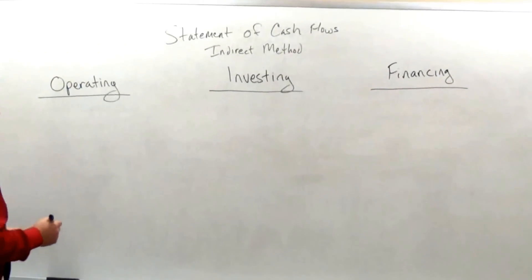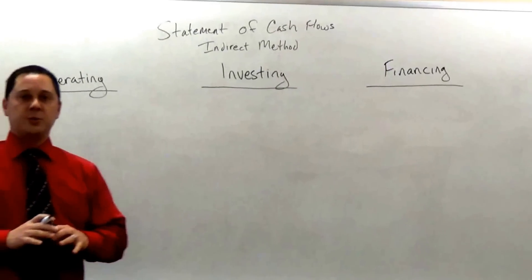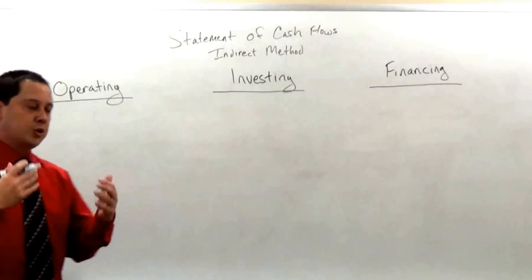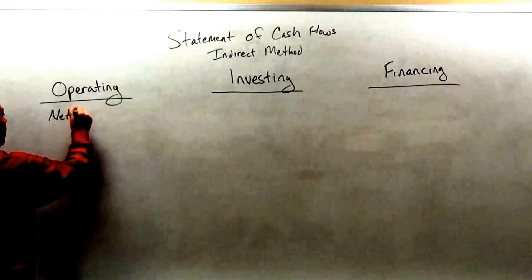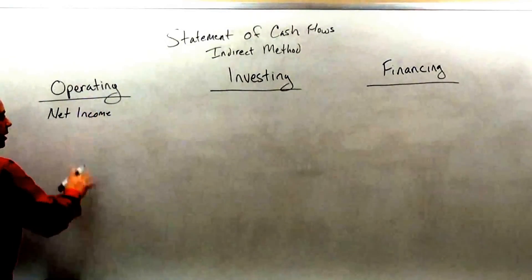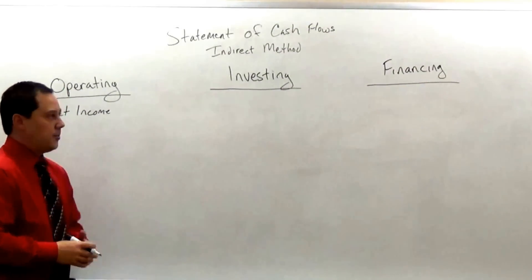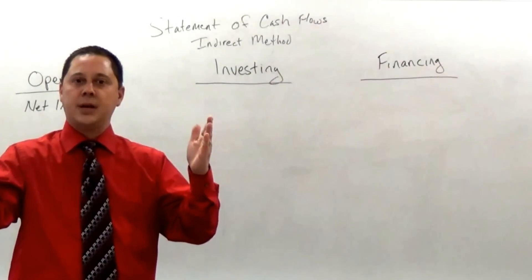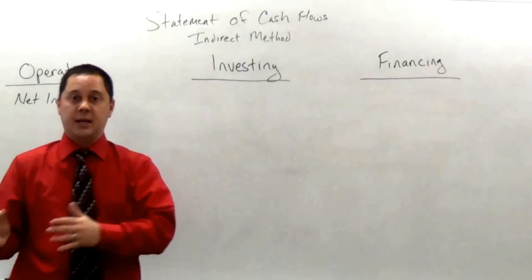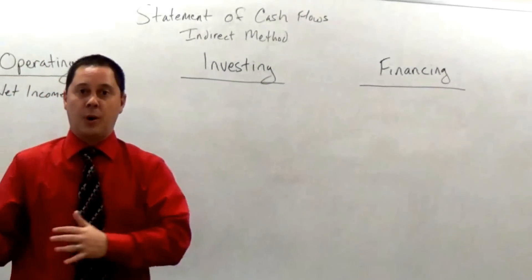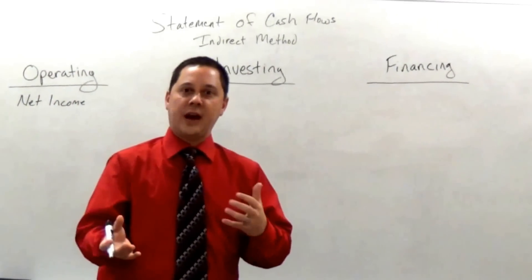So let's first start talking about the operating activities. To start off, you begin with the net income when you use the indirect method. You take that from your income statement, figure out what your net income is, and then start from there. Basically, you want to figure out what the changes have happened in your cash from your beginning cash to your ending cash.